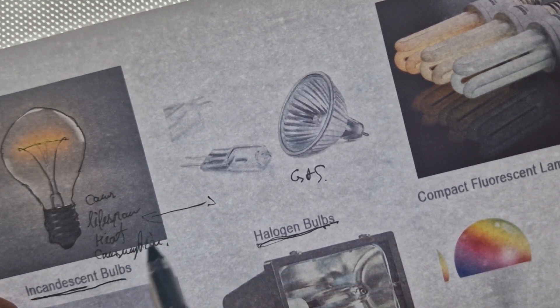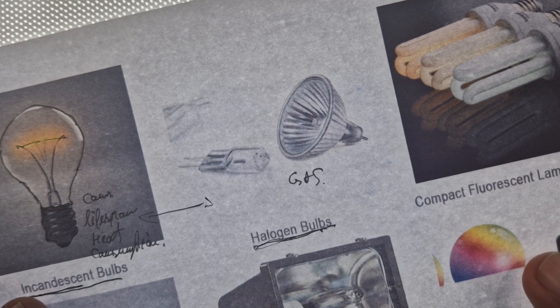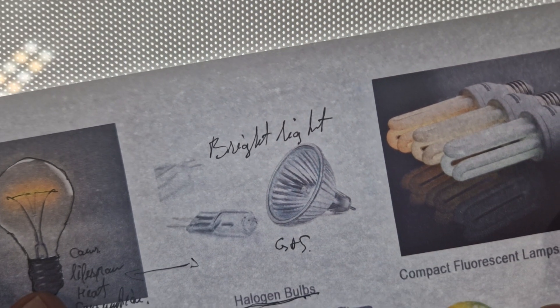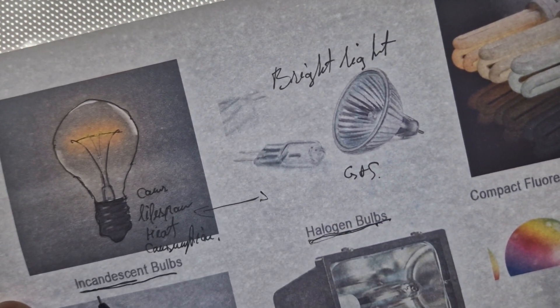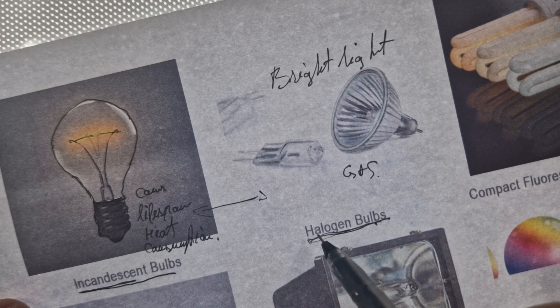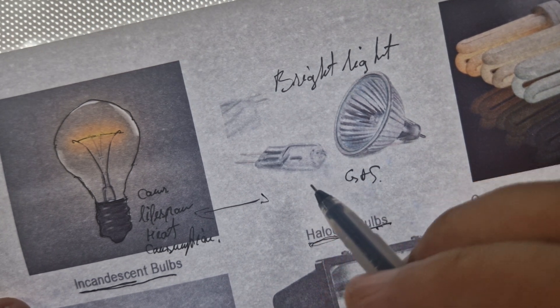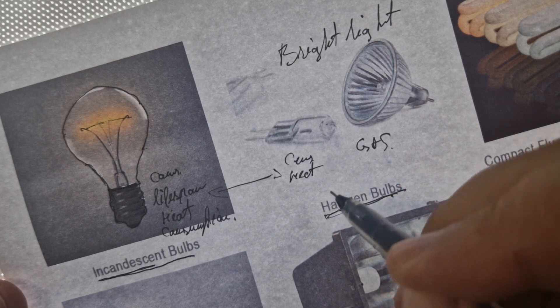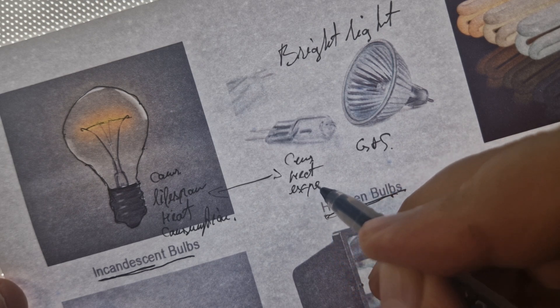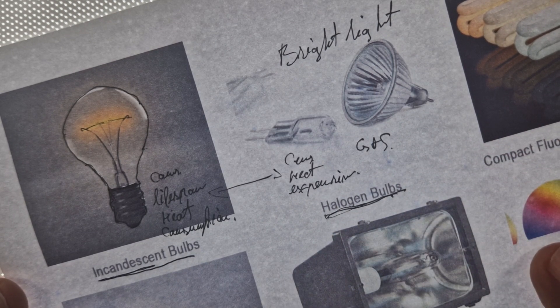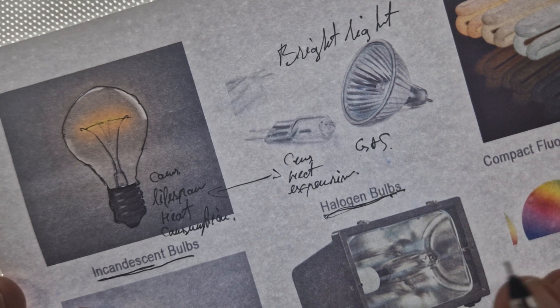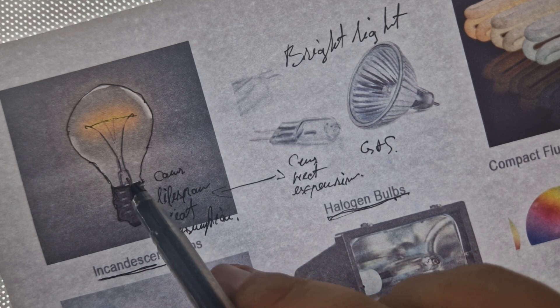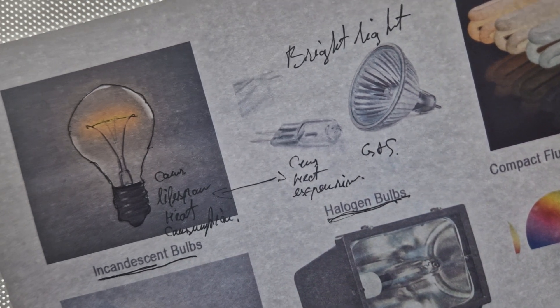What are the pros in the halogen? It produces bright light. It's more efficient than the incandescent bulb and has better color rendering. The cons: it's still generating heat. It's more expensive than the classic incandescent bulb and has a shorter life span than others. But in all, halogen is better than the classic incandescent bulb.